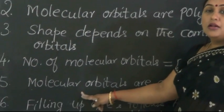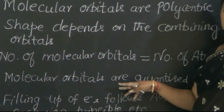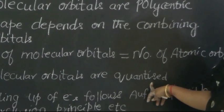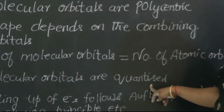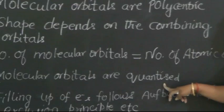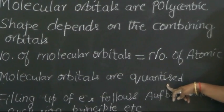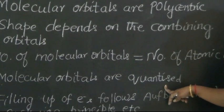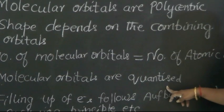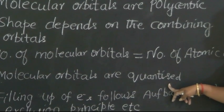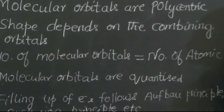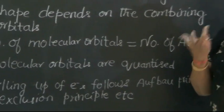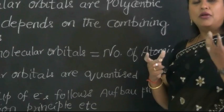The molecular orbitals formed by the combination of atomic orbitals have certain definite amounts of energy. This is what the scientists mean when they say that molecular orbitals are quantized — each molecular orbital possesses a certain amount of energy. Just as atomic orbitals also possess some amount of energy, the molecular orbitals formed from them will likewise have certain definite quantized energy levels.